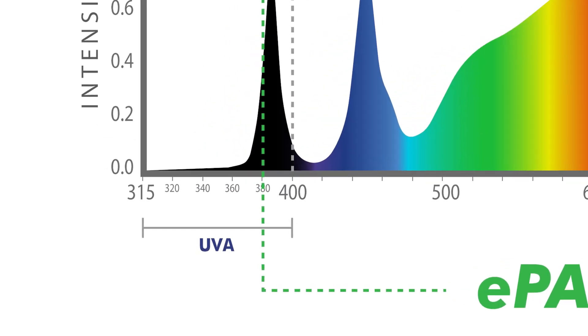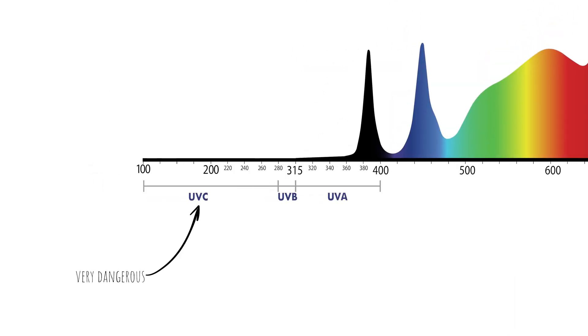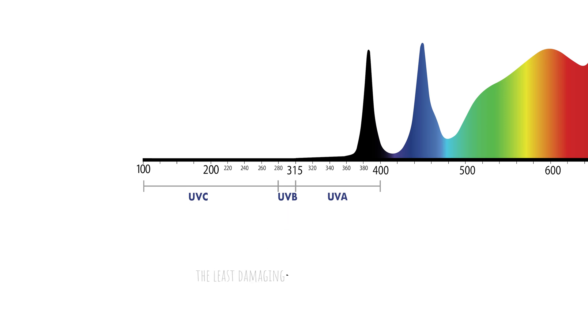We're going to specifically talk about the ranges that our products, the iLogic, come into play when talking about ePAR. The major key emitter we use in our fixture that applies to ePAR in UV is specific to the UVA range — the least harmful of the three UV types. UVC is the most harmful with the largest spectrum range, UVB is a fairly narrow range that mostly causes sunburn and damage, and then UVA falls very close to the violet range.